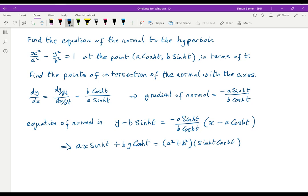So there is the equation of the normal given in terms of t, and it's going to meet the x-axis when y is 0, and therefore x equals (a² + b²)/a, and sinh t cancels cosh t.